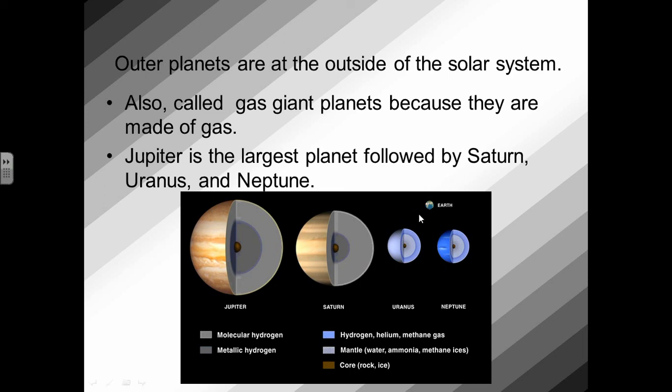Also, if you look at the picture, you can see the size of Earth compared to these planets. So the outer planets are much larger than the inner planets. Looking at the picture, you can see that Jupiter is our largest planet, followed by Saturn, Uranus, and Neptune.